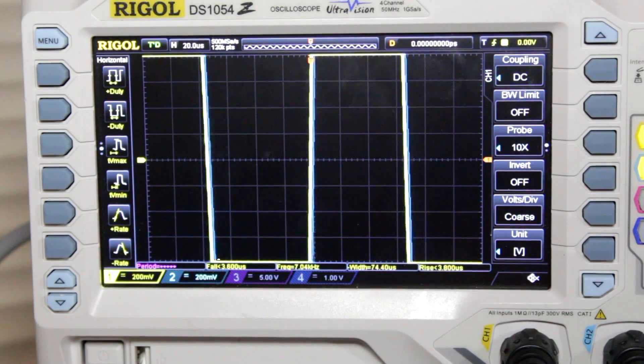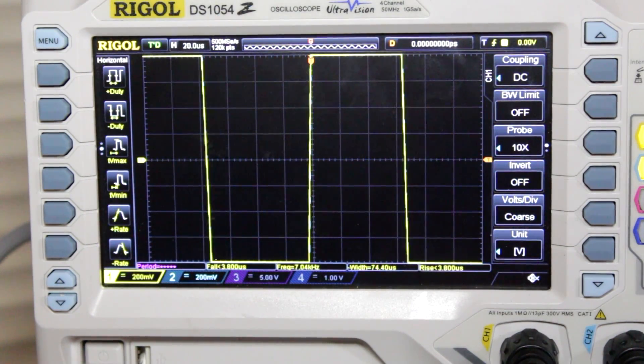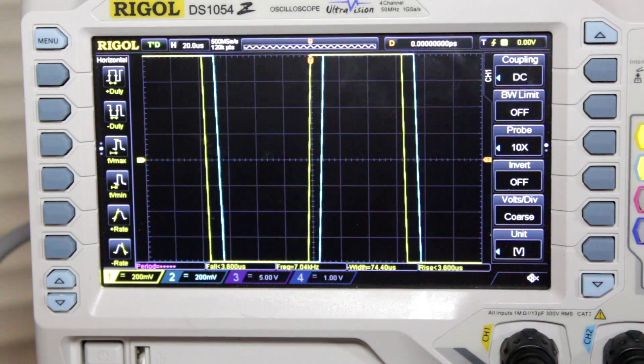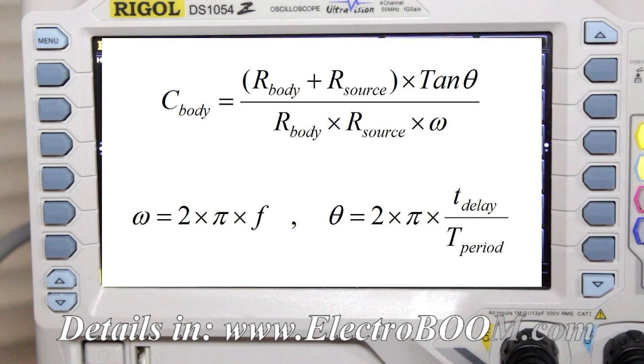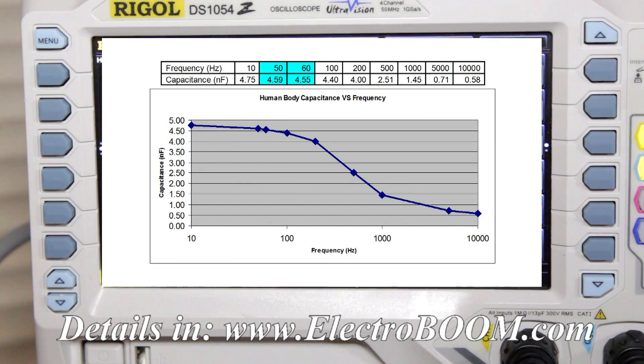Here, I've zoomed in on the edges of the signals. Now, all I need to do is to measure the amount of shift in time and plug it into this formula. And voila! I have the human body capacitance for a specific frequency. Here is the measurement for a range of frequency.